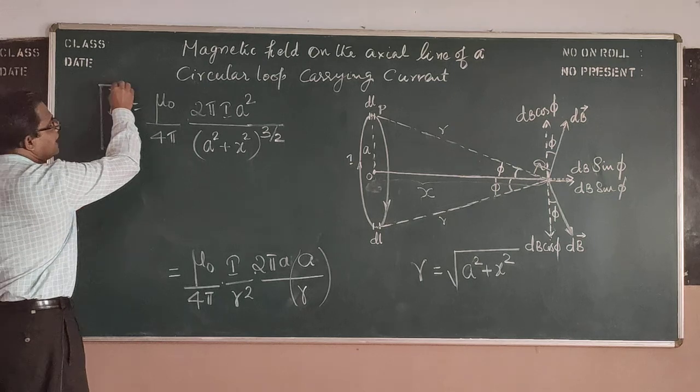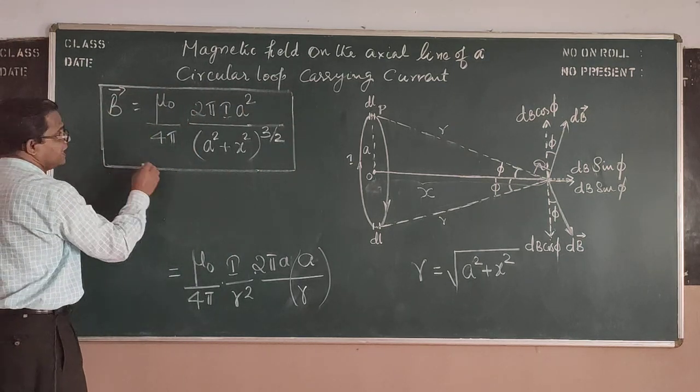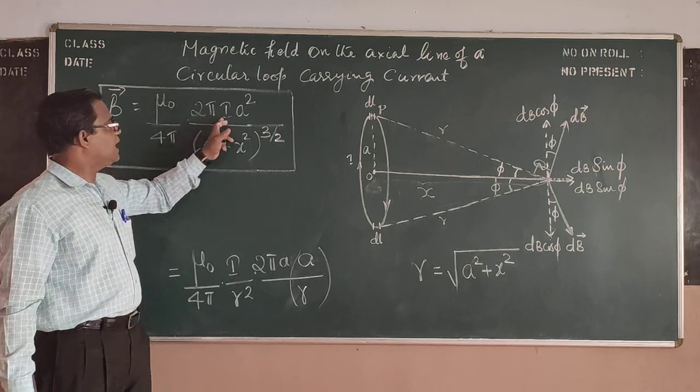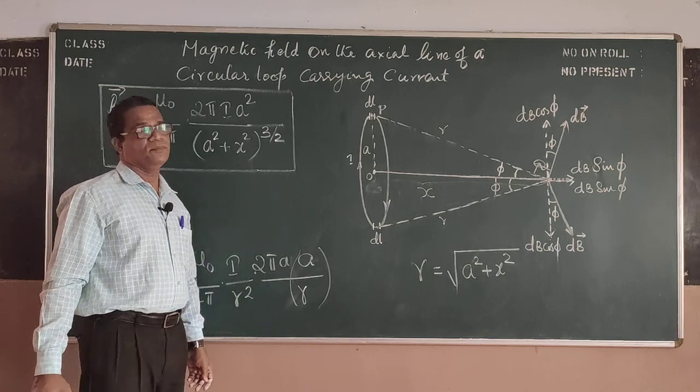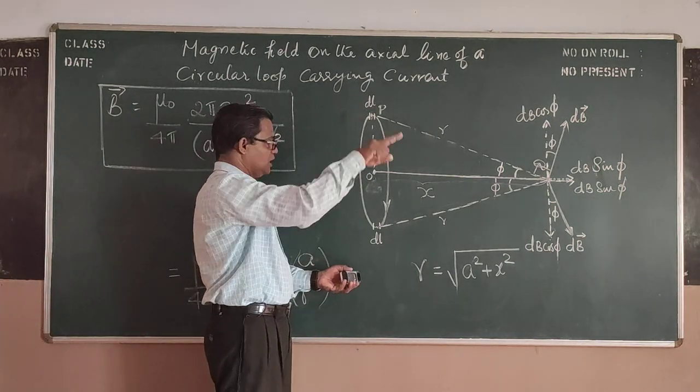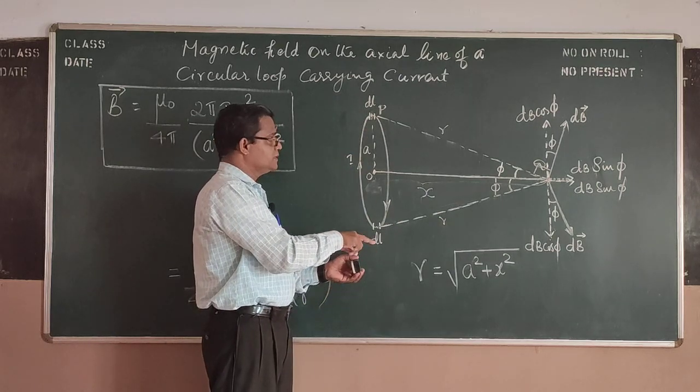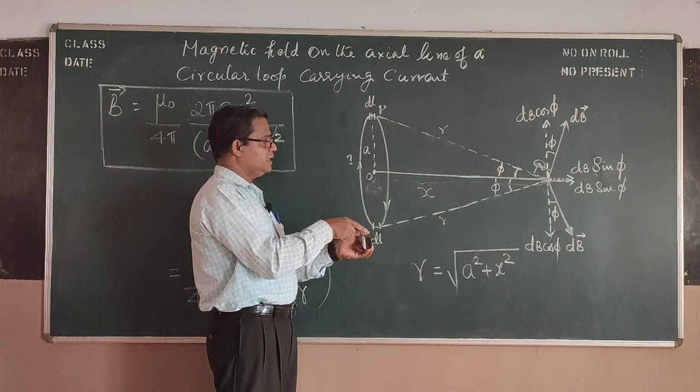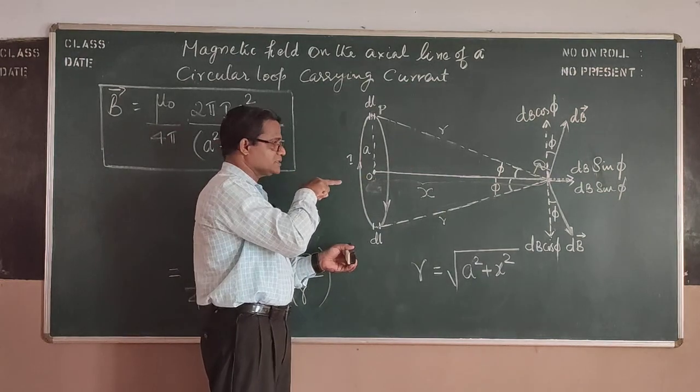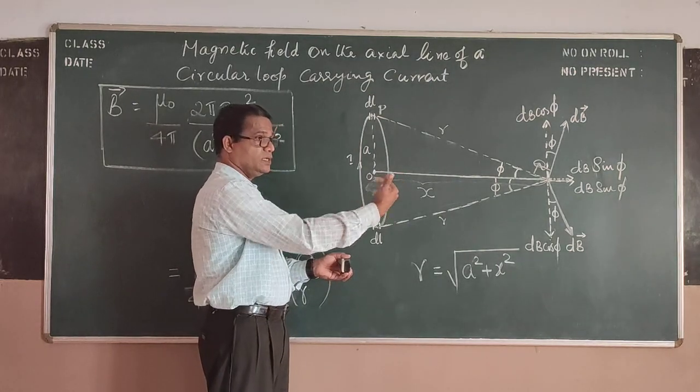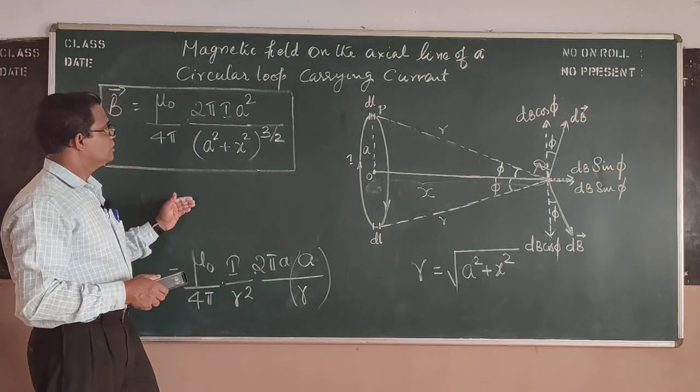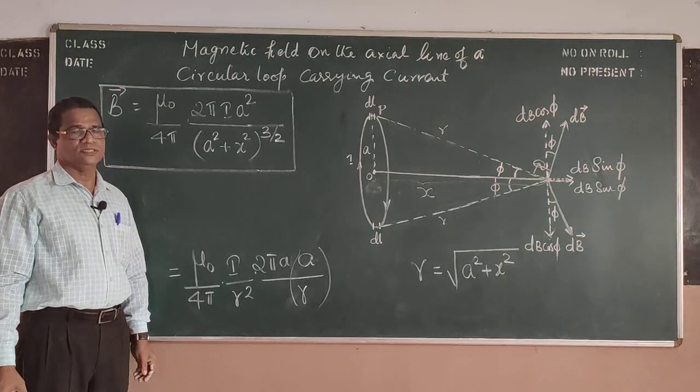So the field at the axial point at the distance X from the center of the loop will be equal to mu_0 by 4 pi into 2 pi I A square by A square plus X square raised to 3 by 2. And as the current is going along this particular direction, the field is going into the plane. If it is like this then it must be out of the plane. That's all, thank you very much.